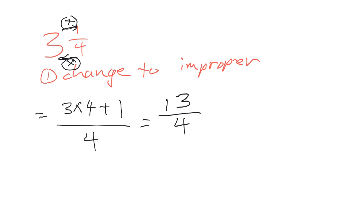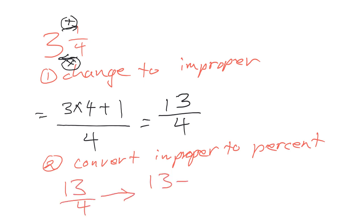Now, the next stage is we're going to convert it to percent, the improper to percent. What we have to do is take 13 over 4, and then we're going to go 13 divided by 4, and then times that by 100, which gives us 325%. And we're done.